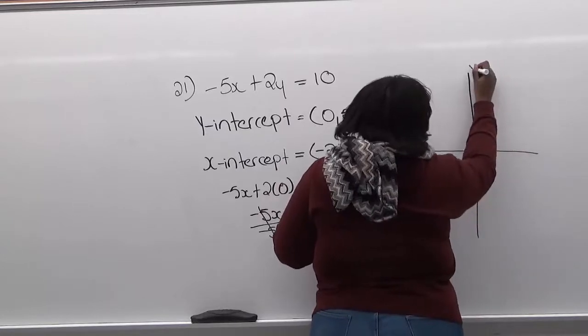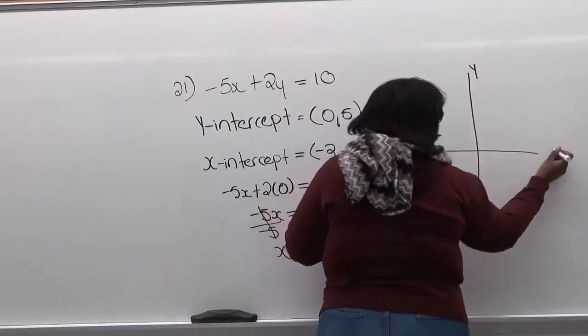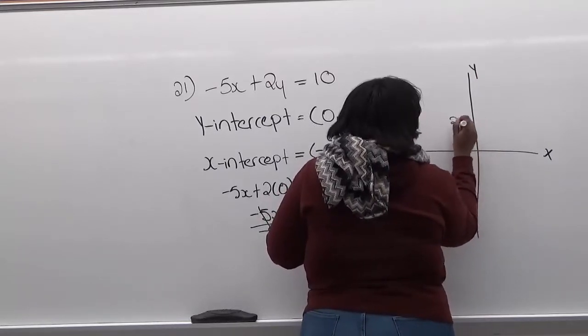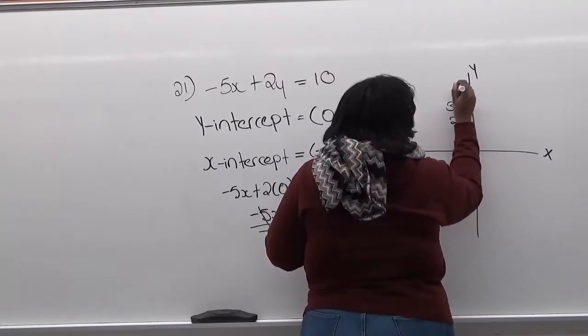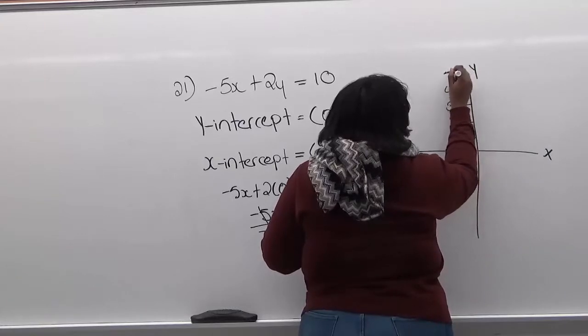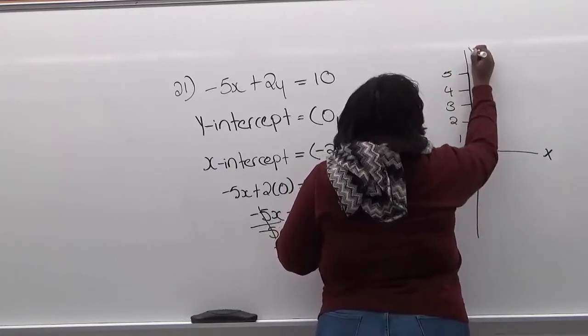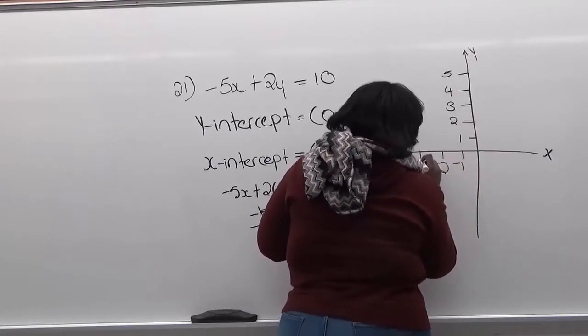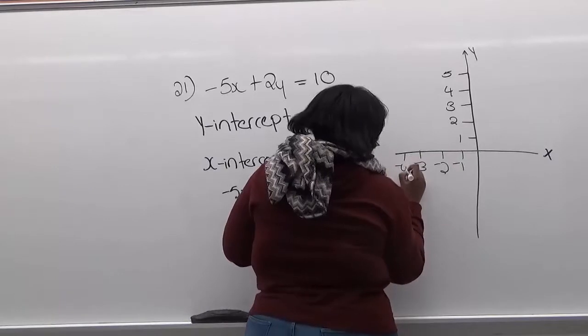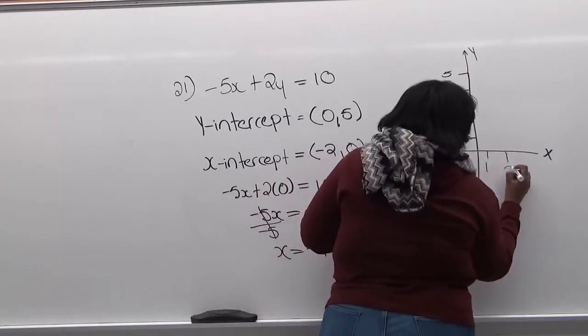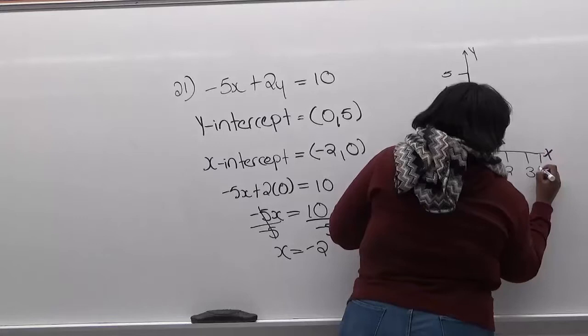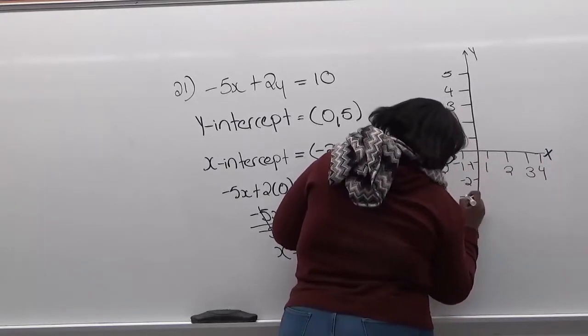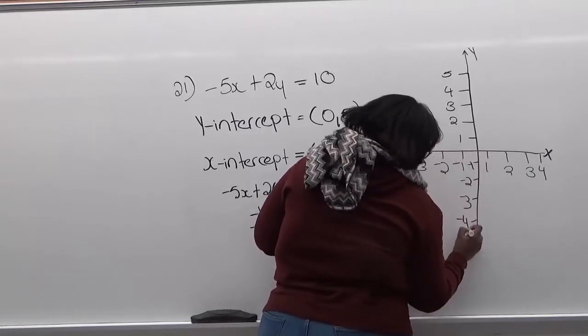So this is our y-intercept and this is our x-intercept. So we can have one... So we have our y and then we're going to have our x. Do the same on the other side. Okay.